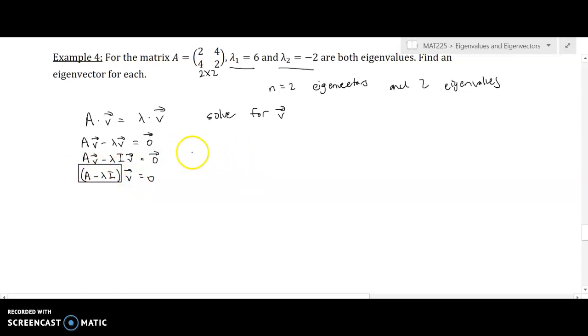So let's go ahead and compute our A minus lambda I. So for lambda 1 equals 6, if I plug that in here, I have A minus 6I is what I need to calculate. Okay, so A is the matrix [[2, 4], [4, 2]]. 6I is, well, I is the [[1, 0], [0, 1]] matrix.